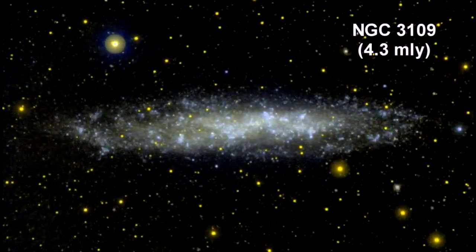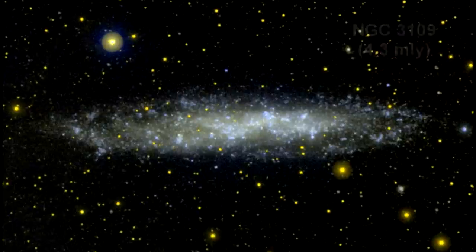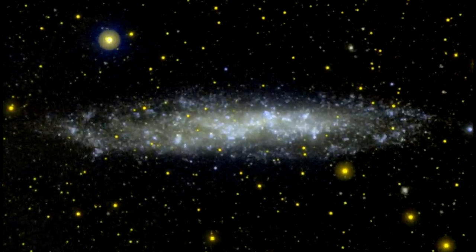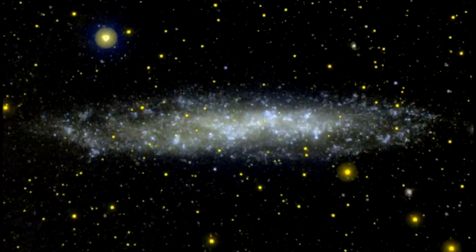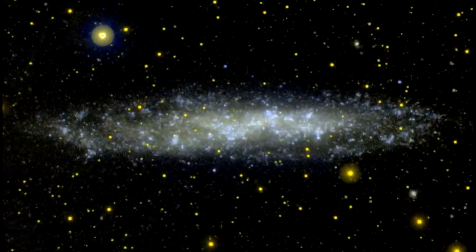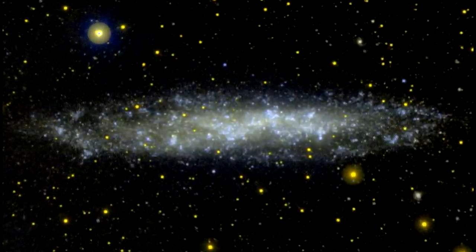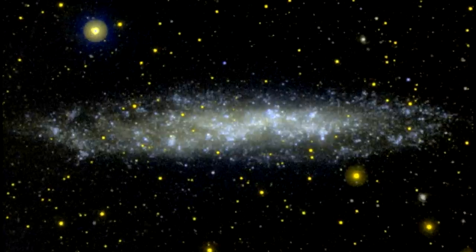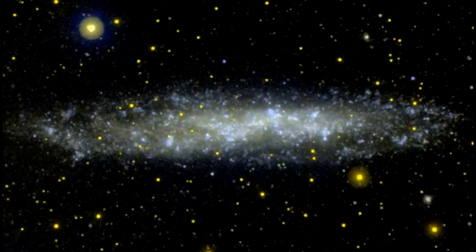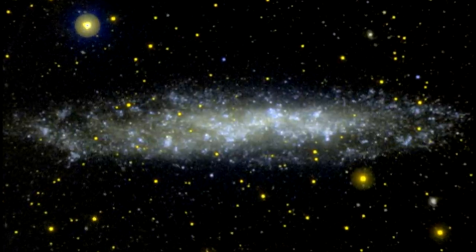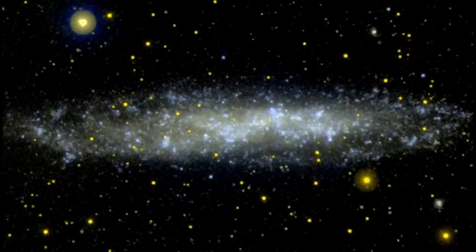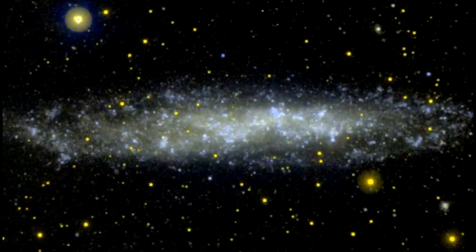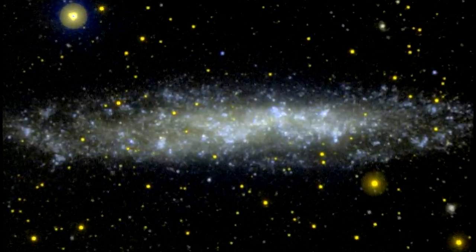NGC 3109 looks like a small spiral galaxy. If it is a spiral galaxy, it would be the smallest in the local group. It is oriented edge-on from our point of view and may contain a disk and a halo. It does not appear to possess a galactic nucleus, but it does seem to contain an unusually large number of planetary nebulae.